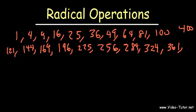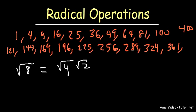Let's say if you want to simplify the square root of 8. Which is the largest perfect square that goes into 8? It's 4. 8 divided by 4 is 2. So you want to simplify root 8 as root 4 times root 2. You can take the square root of 4, which is 2. So your answer is 2 root 2.